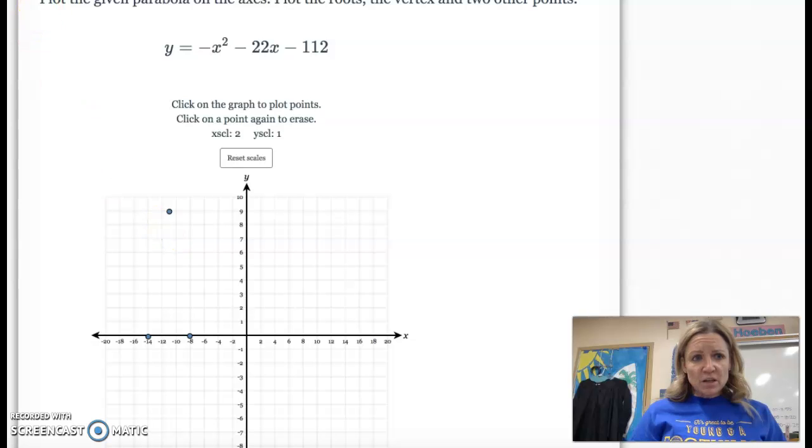So I just need two more points. So I'm going to pick a point between negative 8 and negative 11. So I just picked negative 10, but you could pick negative 9 if you wanted to. And so if you plug in negative 10 back up here, negative 10 squared is 100. The opposite of 100 is negative 100. And then negative 22 times negative 10 is 220 plus 220 minus 112. You should have a point up at 8.